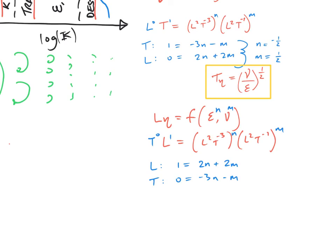And this time we find that for the powers of L, 1 is equal to 2n plus 2m. And for the powers of time T, 0 is equal to minus 3n minus n. And this time n is equal to the minus quarter, and m is equal to 3 quarters. So this time the Komogorov length L_mu is equal to mu to the power 3 over epsilon, all to the power 1 quarter.